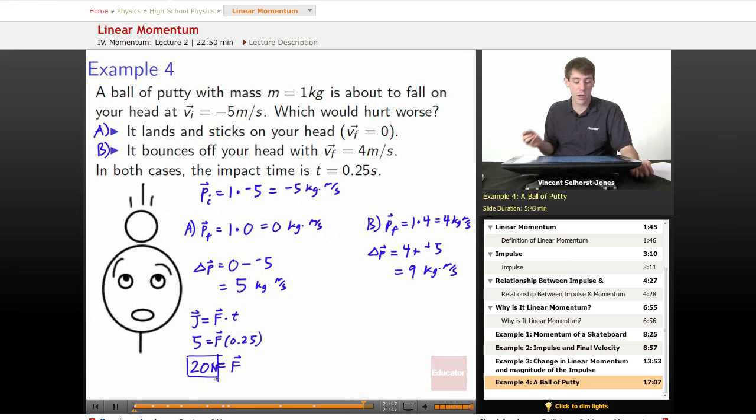How much force do you wind up undergoing in B? The impulse is equal to the force times the time again. So we've got 9 is equal to that force times 0.25. So 36 newtons is equal to the force in part B.